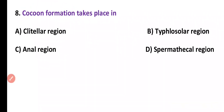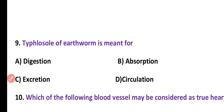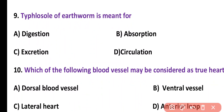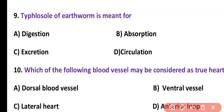Question number 9. Typhlosole of earthworm is meant for: digestion, absorption, excretion, or circulation. Correct answer is option B.